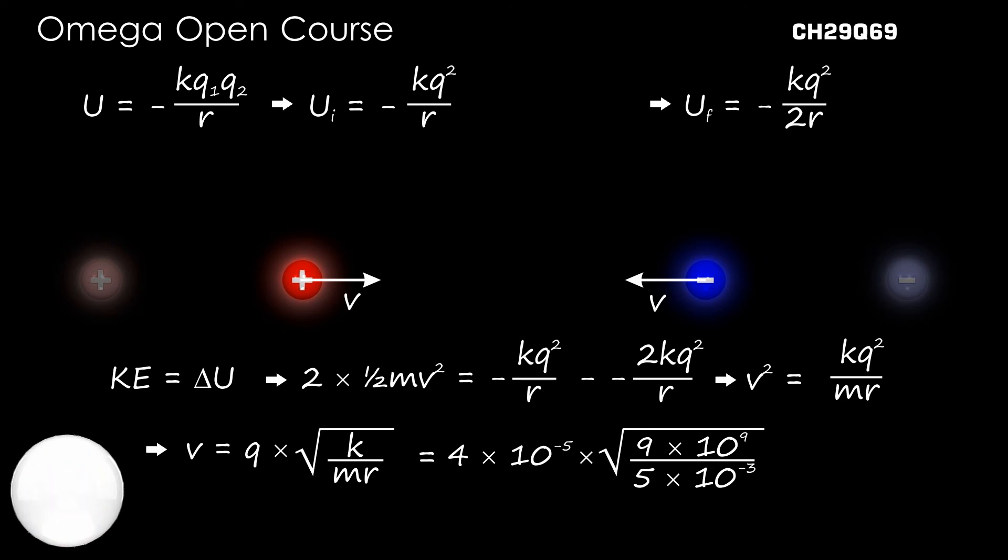Putting the values, we get V = 4×10^-5 × √(9×10^9 / 5×10^-3). Simplifying, we get 54 meters per second.